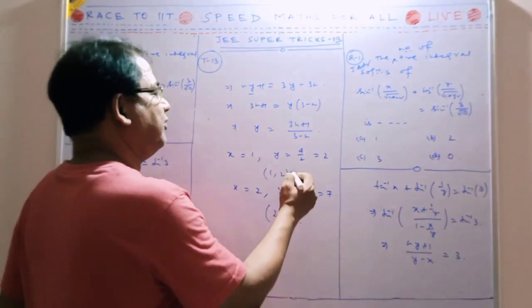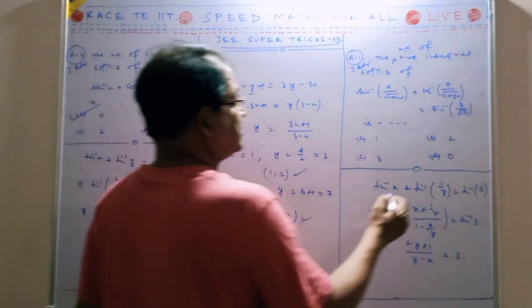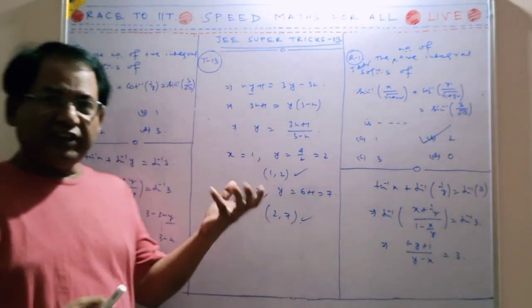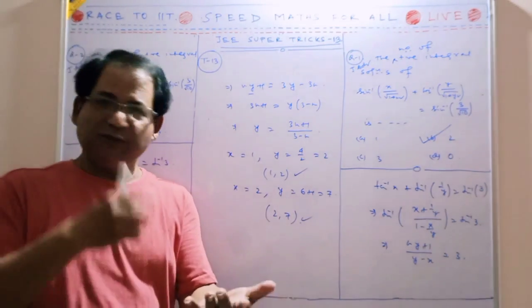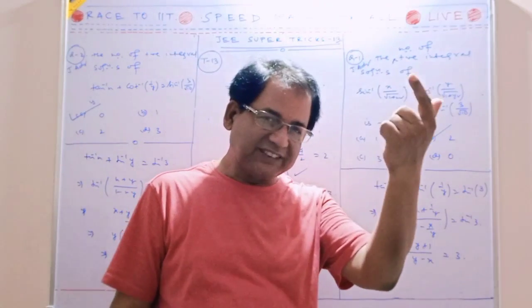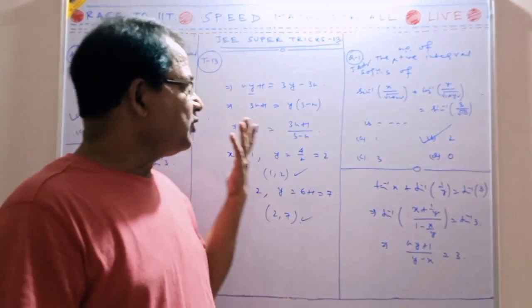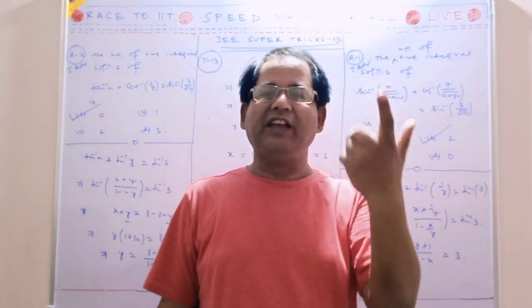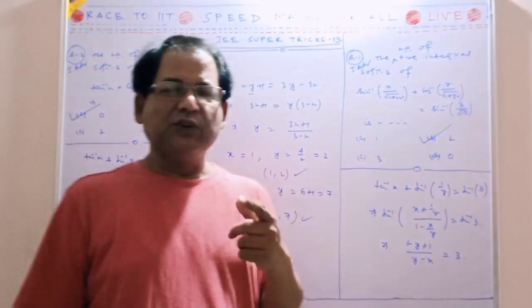The number of positive solutions is 2. These types of questions are not difficult if you understand the concepts clearly. That means once you catch all these tricks, nobody can fool you. Any question you can solve.